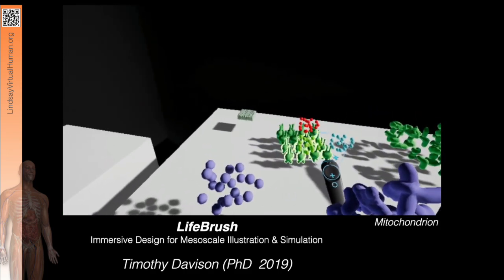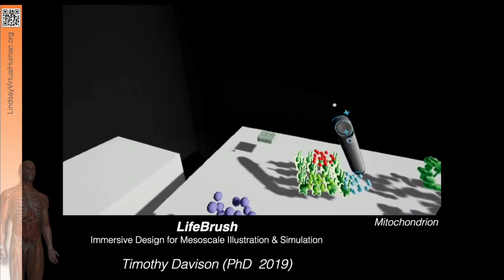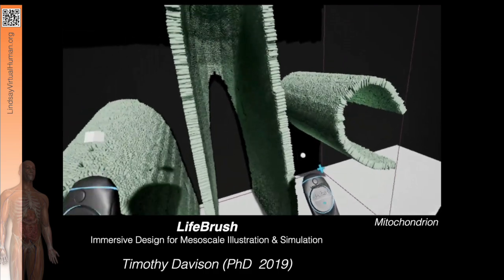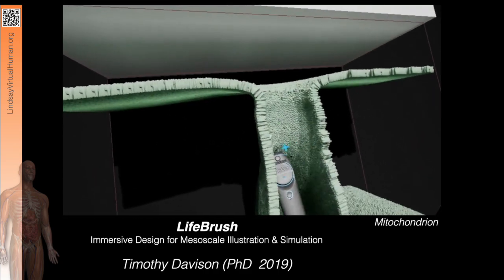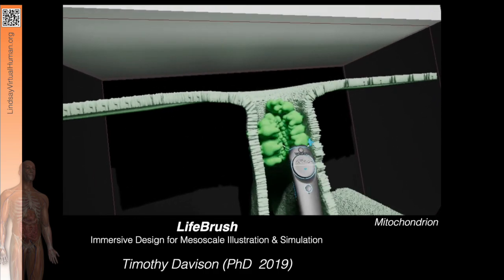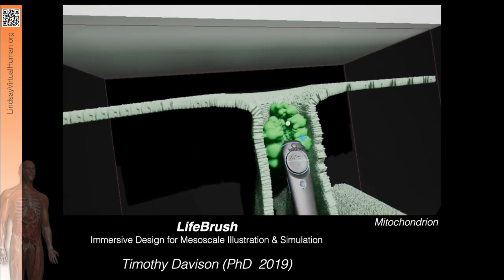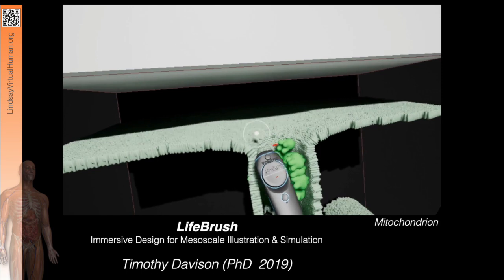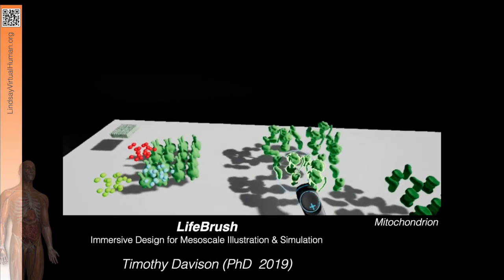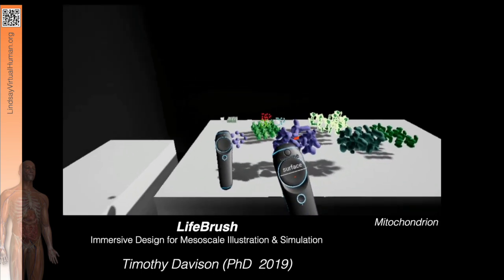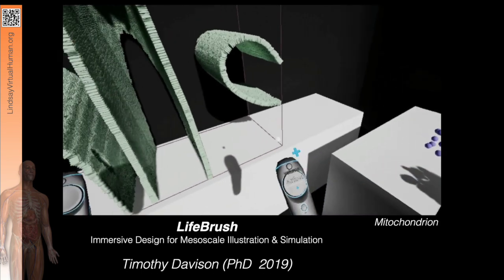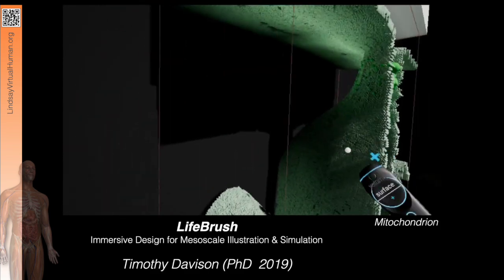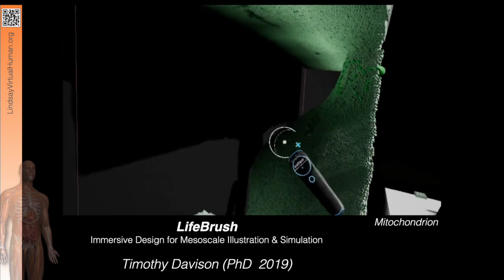Now we're going to paint some of the molecules embedded in the surfaces of the mitochondria. Here we're adding junction proteins to the mouth of the cristae region, that central region. Now we're going to paint in ATP synthase and the proton pump molecules.